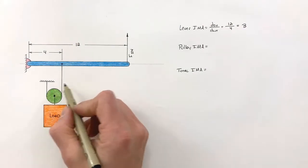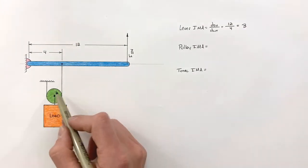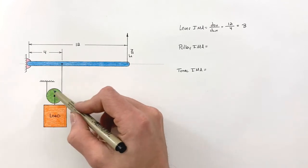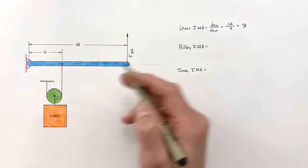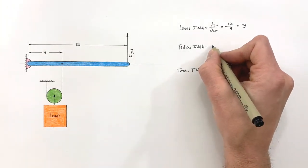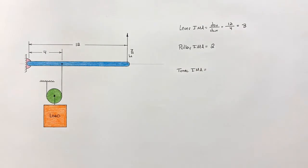Now for the pulley — the IMA of a pulley is simply how many strands are connected to the active end of the pulley. That means our pulley has an IMA of 2.